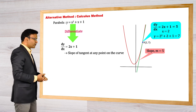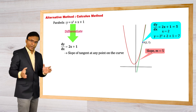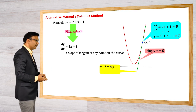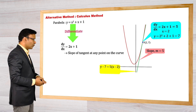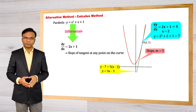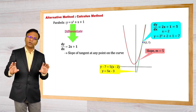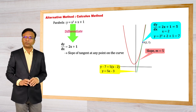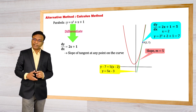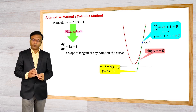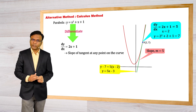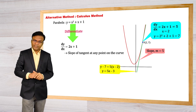So the equation of tangent at point P using point-slope form is y minus 7 is equal to 5 multiplied by x minus 2, or y is equal to 5x minus 3. Here we are not confined to any single method to find the equation of tangent — we now have two methods. The calculus method is always available. Whenever the equation of parabola is given in standard form we use the standard equation of tangents, but even in that case we can also use the calculus method.